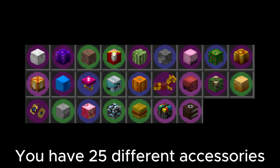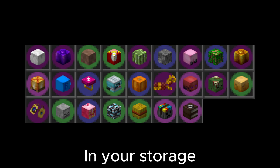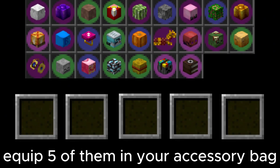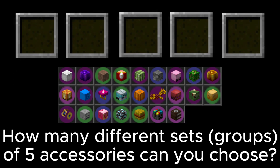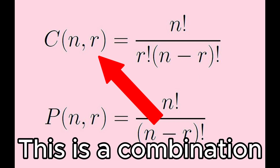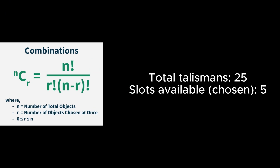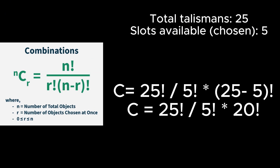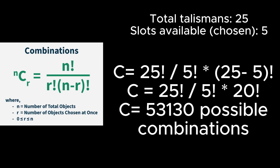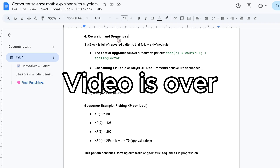You have 25 different accessories in your storage, but you only have space to equip 5 of them in your accessory bag. The question is: how many different sets of 5 accessories can you choose, regardless of the order? Since order doesn't matter, this is a combination. After applying the combination formula, you get an answer of 53,130 possible combinations.